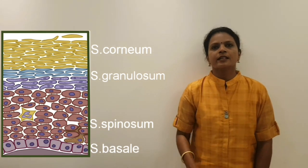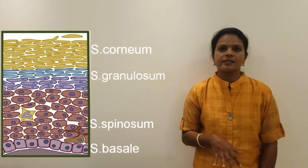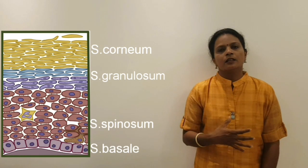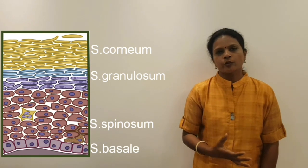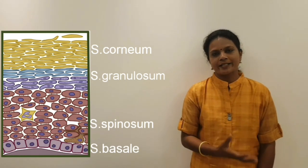In psoriasis, instead of 20%, 100% of cells try to differentiate and undergo keratinization.